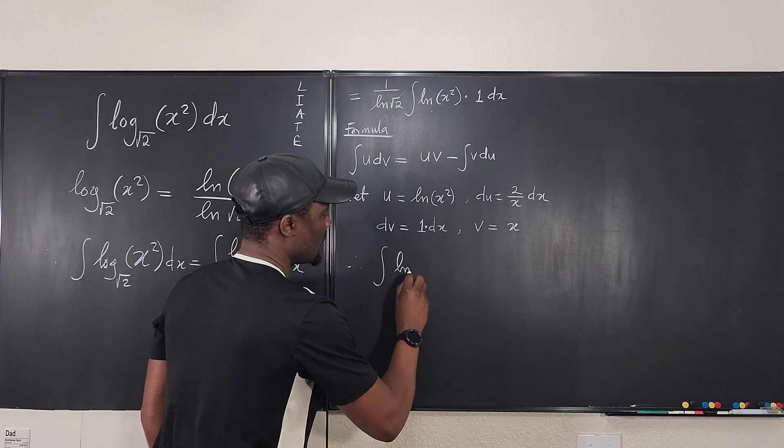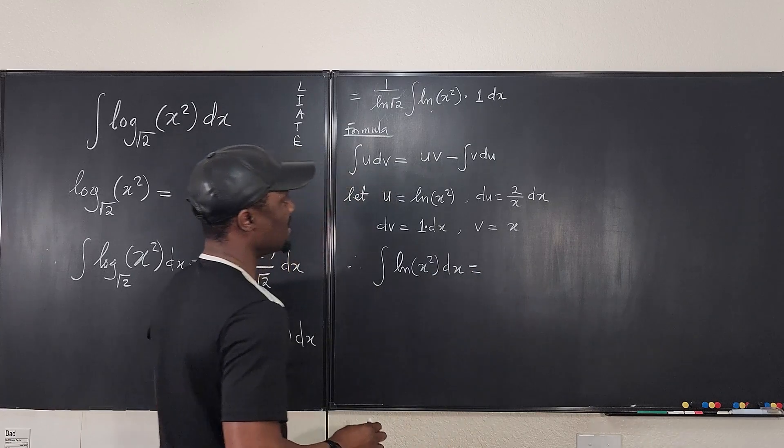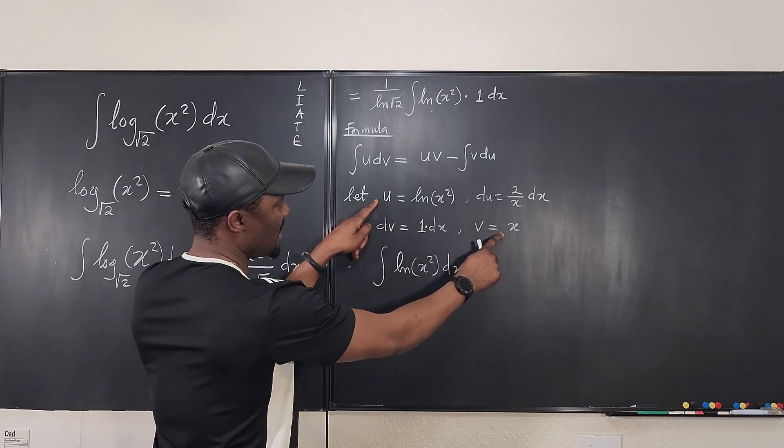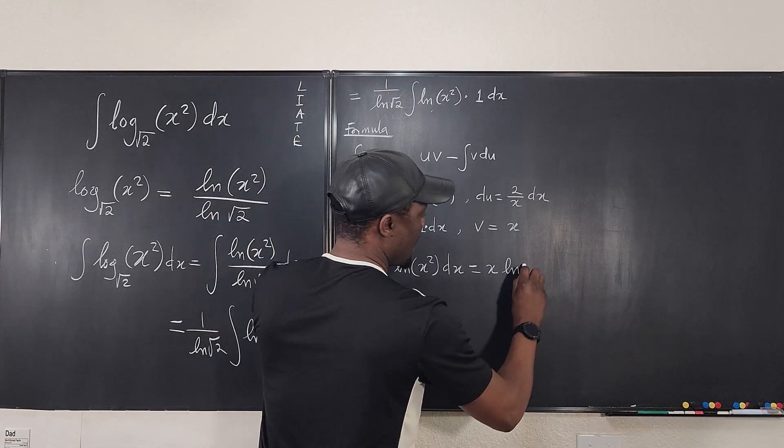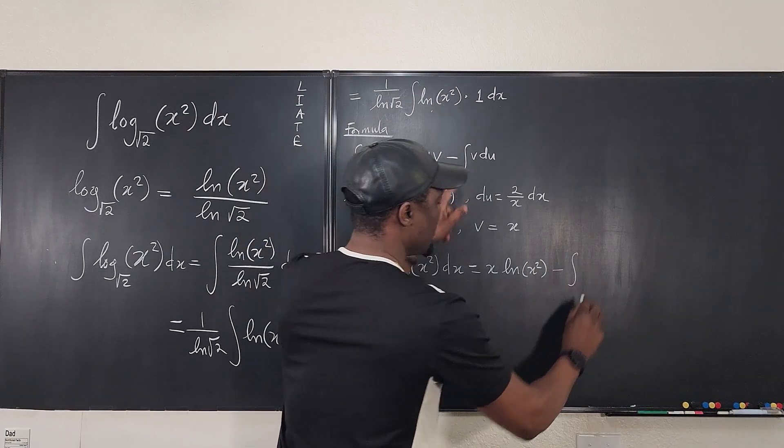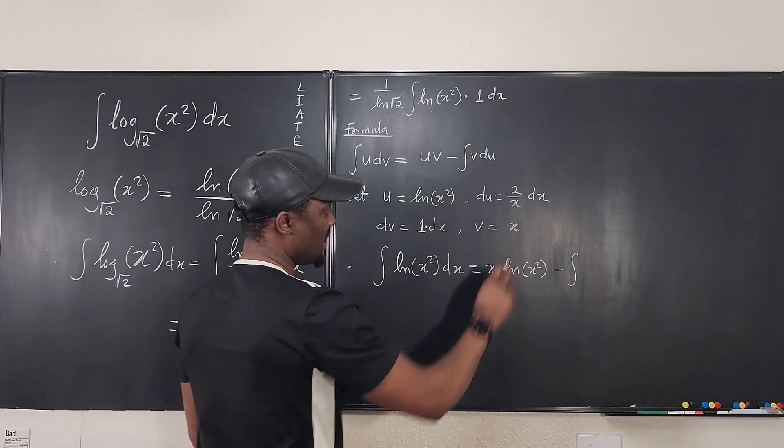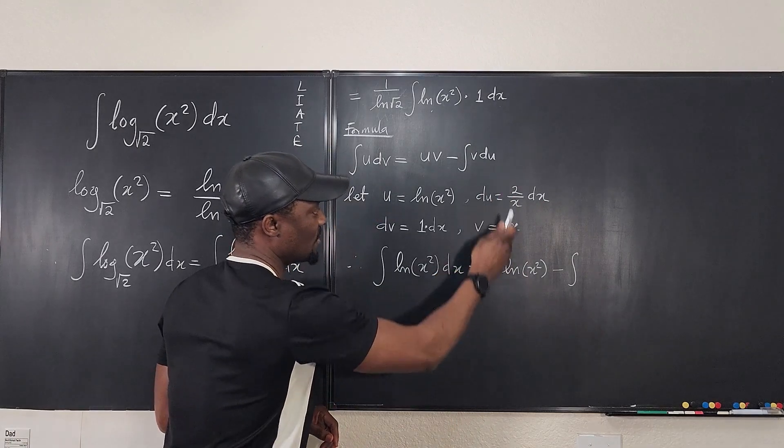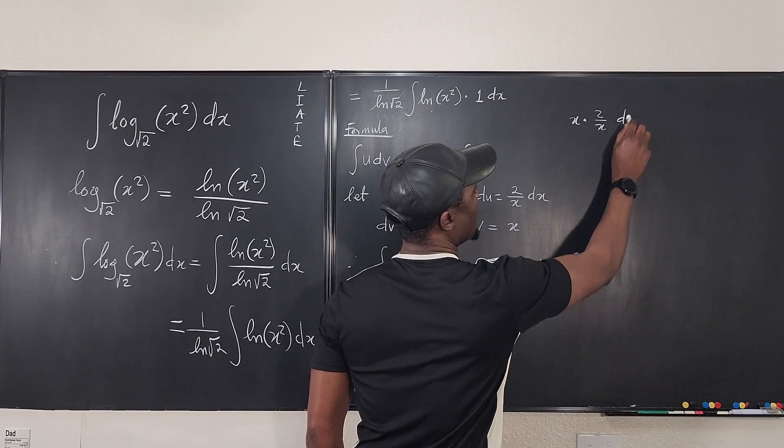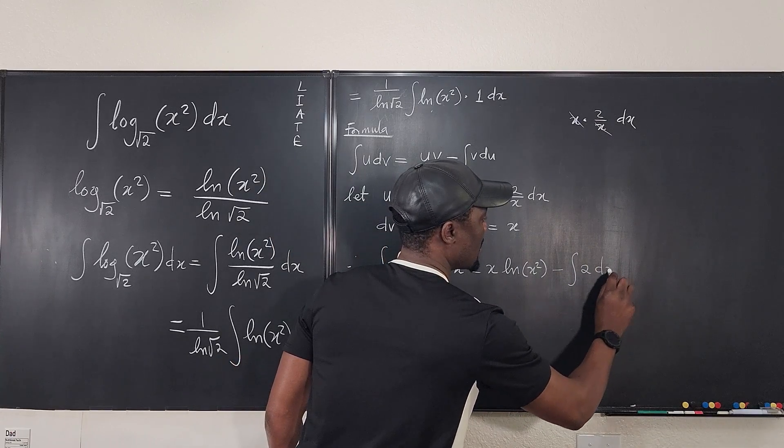Therefore, the integral of the natural log of x squared dx is the same thing as uv, which is u times v, which is x ln of x squared minus the integral of v du. What is v? v is x. What is du? 2 over x dx. So let's multiply these two together. x times du, which is 2 over x dx. You notice that these two cancel out and what you have left is just 2 dx.